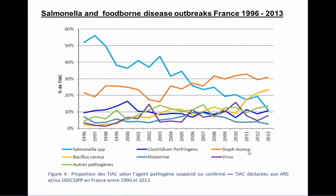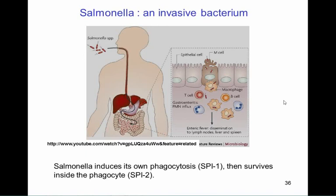Salmonella used to account for more than half of all foodborne disease outbreaks in France about 20 years ago; now it accounts for only about 10%, with Bacillus cereus and Staphylococcus aureus becoming more important. What is happening during Salmonella infection: bacteria are ingested and infect the gut mucosa. Instead of remaining in the intestinal lumen, they bind to M cells and induce their own phagocytosis in cells that would not normally phagocytose.